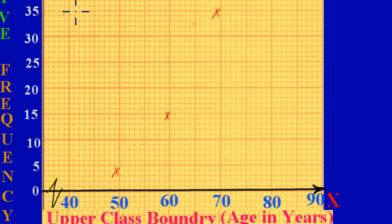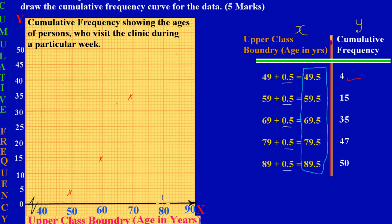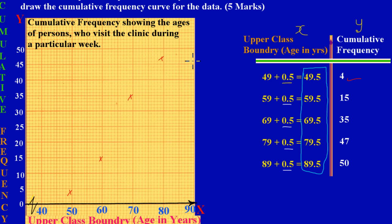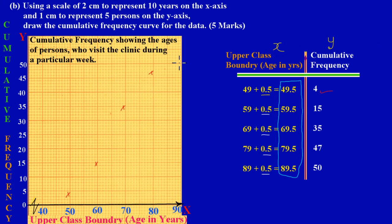Now seventy-nine point five is right next to eighty on the x-axis. I go straight up and stop at forty-seven: starting at forty, going up to forty-five, then two more places, giving approximately forty-seven. Then eighty-nine point five falls between eighty-nine and ninety, and I stop at fifty because that's where the data ends.